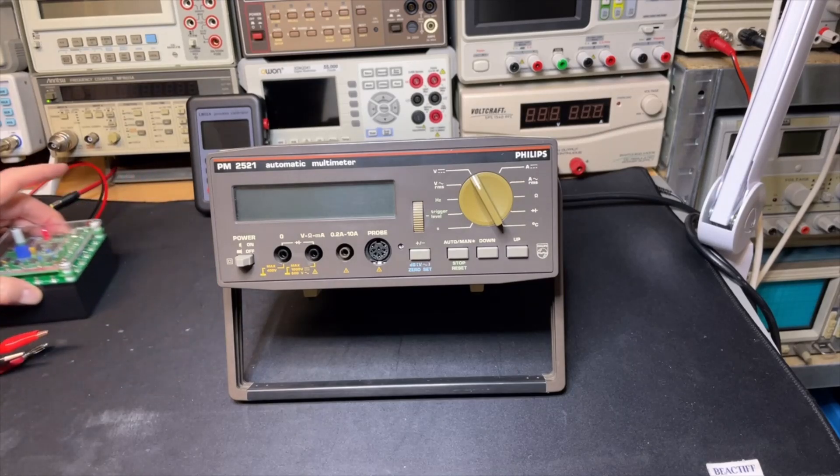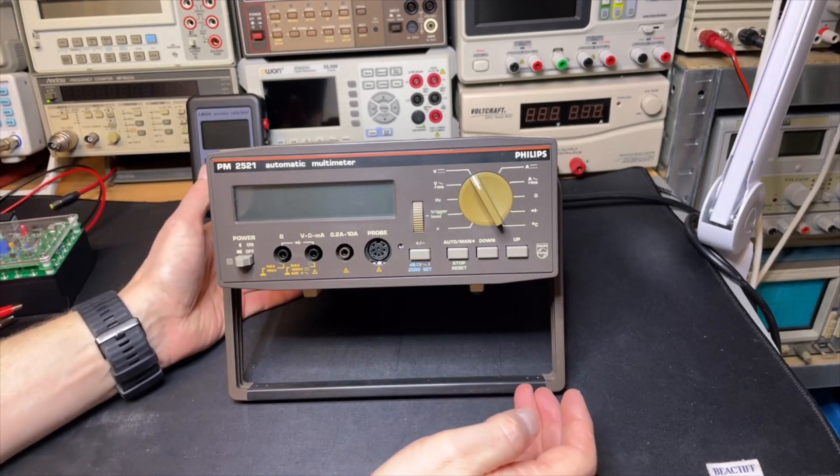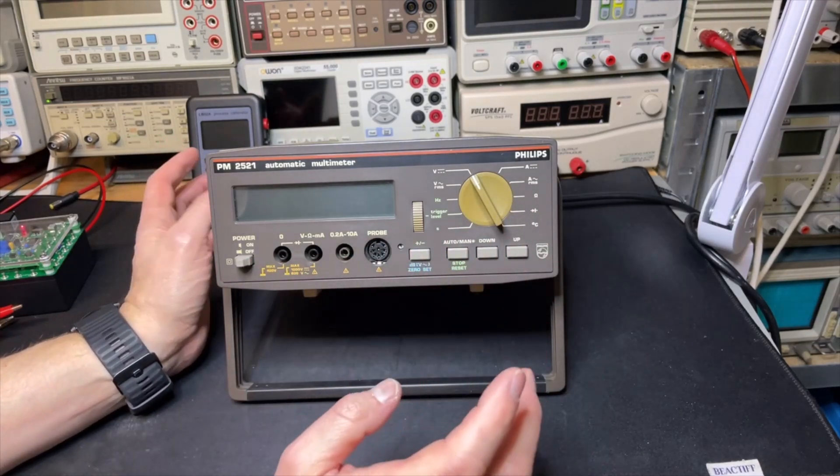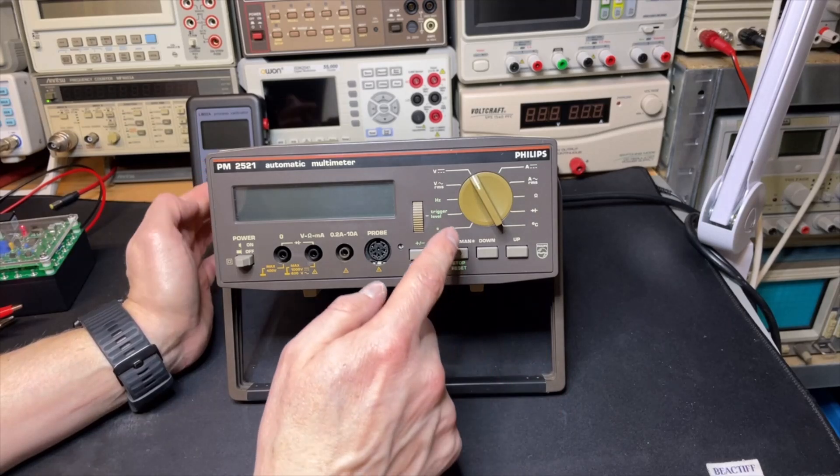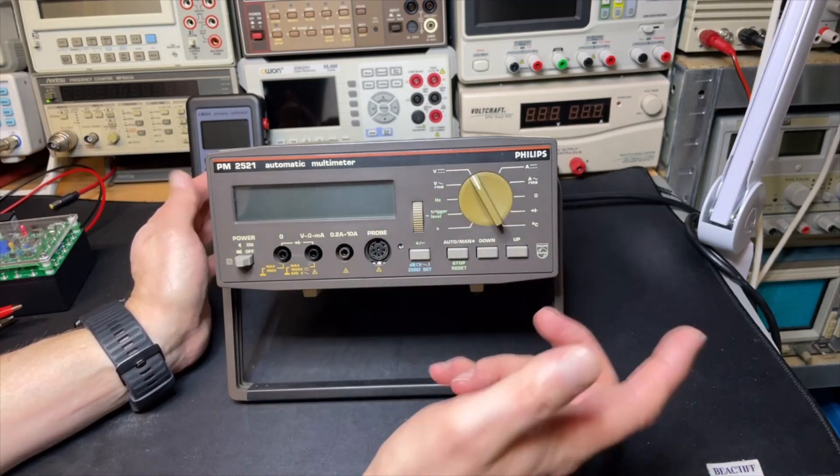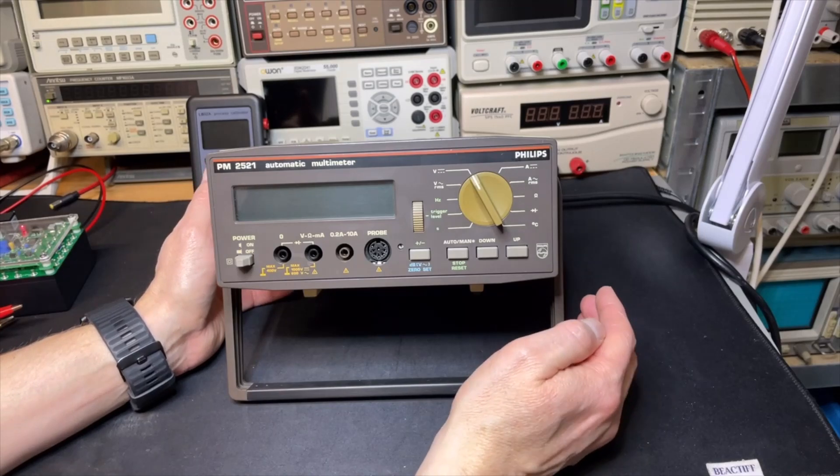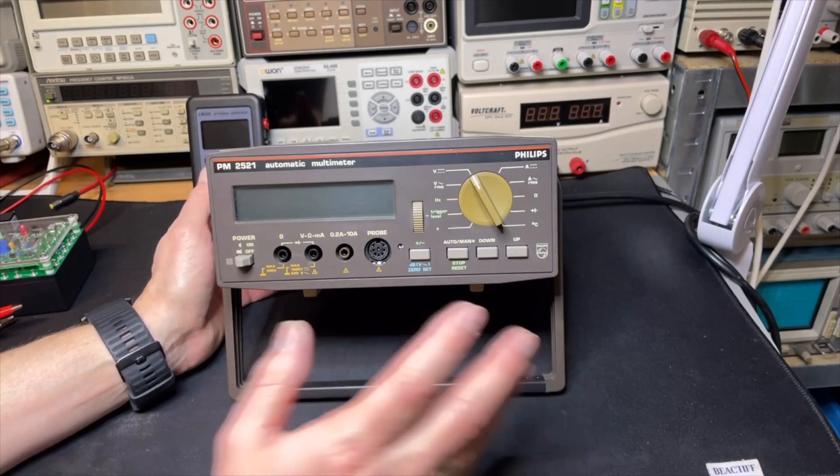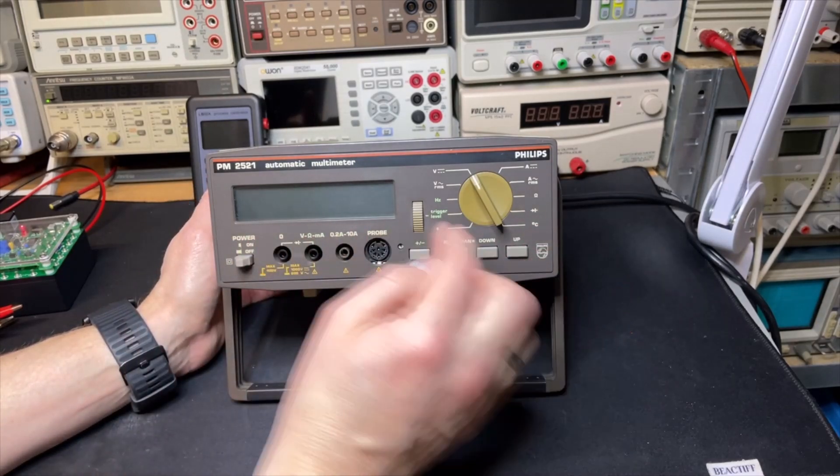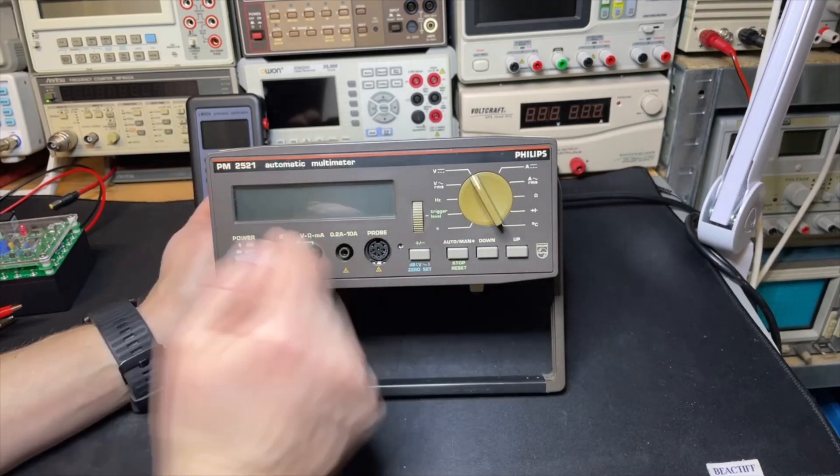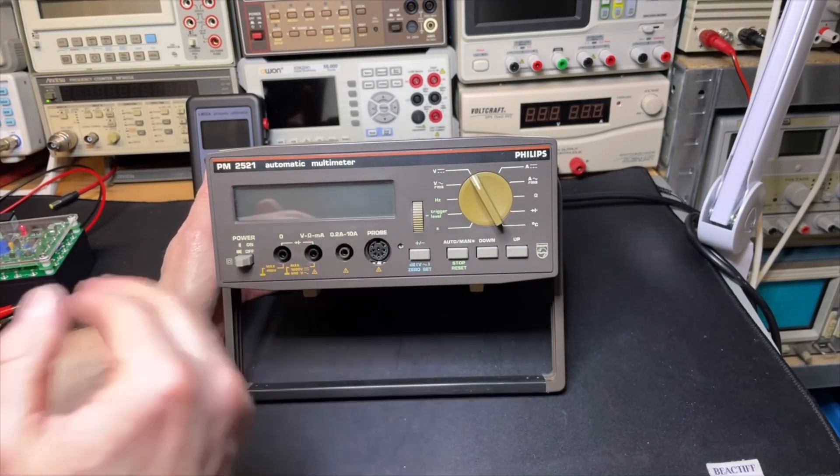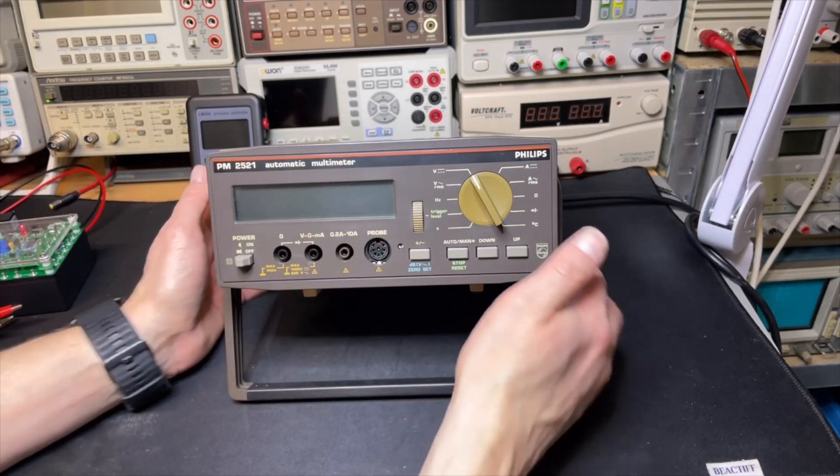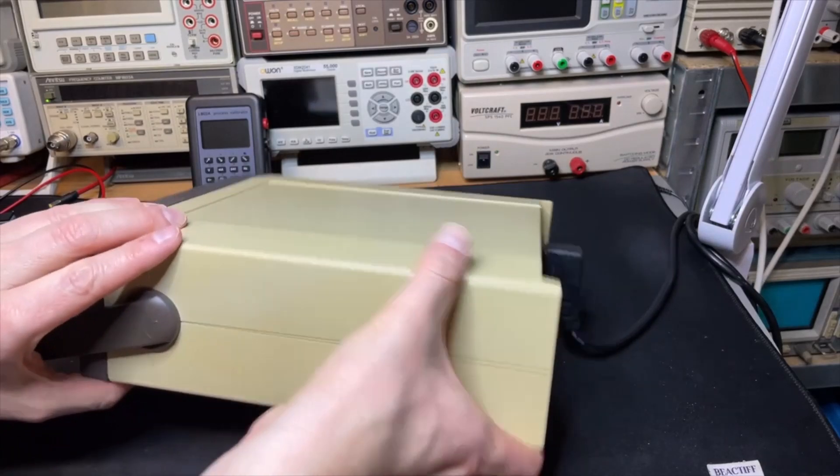Here it is, the Philips 2521. You can also do temperatures with a special probe I don't have, but it has a little frequency counter also so we will do some tests. This is still when it was Philips, so it's all brown. Before it was gray and blue, but this is not the blue line, this is the red line.